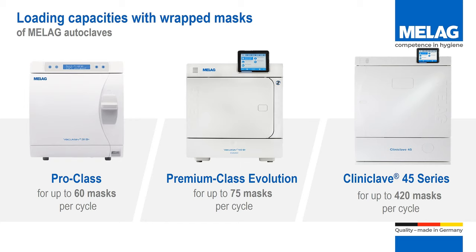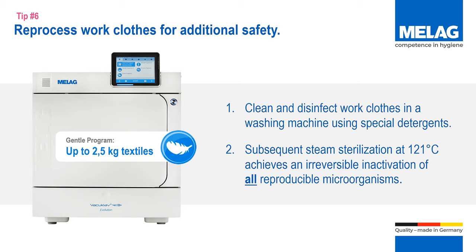Besides face masks, work clothes are an essential part of your personal protective equipment and require safe decontamination and sterilization. Tip number 6: reprocessing work clothes offers additional security. In addition to the cleaning and disinfection of work clothes in a washing machine with special detergents, the subsequent steam sterilization at 121 degrees Celsius achieves an irreversible inactivation of all reproducible microorganisms. It turns out that successful clinics sterilize more goods at a higher frequency since the breakout of the coronavirus. Our Premium Class Autoclaves, with high loading capacities of up to 9 kg instruments and 2.5 kg textiles, in conjunction with smart features such as Dry-Teligence, provide a basis to ensure that approach. Always comply with the manufacturer's specifications before sterilizing textiles or other materials.